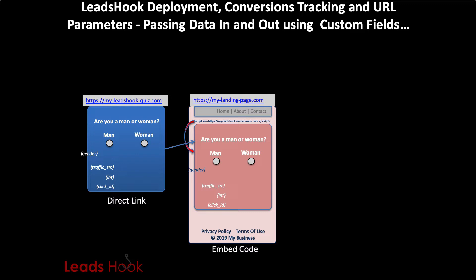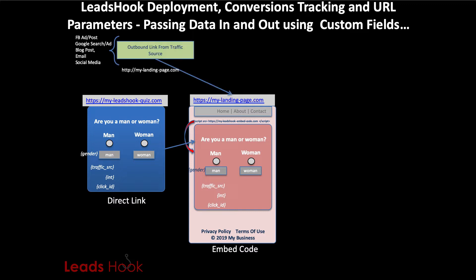These fields are what you're passing to LeadsHook, and gender is the one you'll be generating because of the answers they pick — so you're using LeadsHook to generate data, as well as pass data from a third-party system such as a traffic source like Google, Facebook, or any other traffic source.